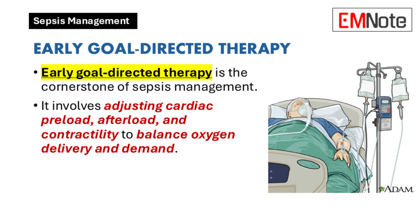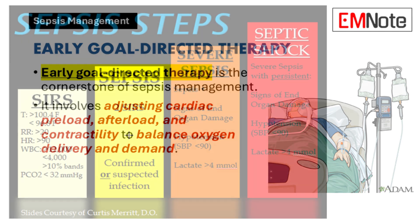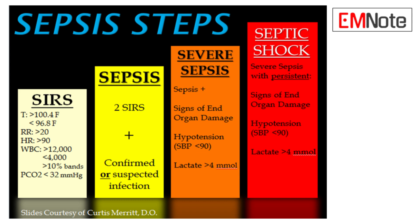The foundation of sepsis management is early goal-directed therapy. This approach involves carefully adjusting cardiac preload, afterload, and contractility to balance oxygen delivery with oxygen demand. The primary goals are to initiate supportive care promptly to address physiological abnormalities such as hypotension and hypoxemia. It is important to distinguish sepsis from Systemic Inflammatory Response Syndrome (SIRS) during the initial assessment.